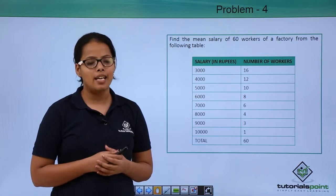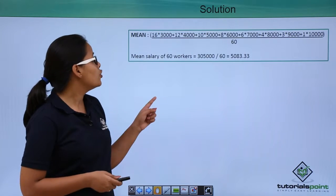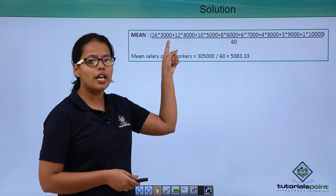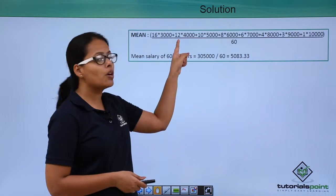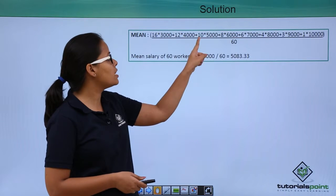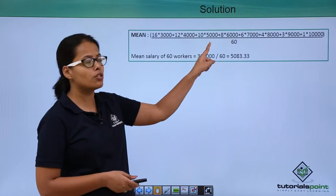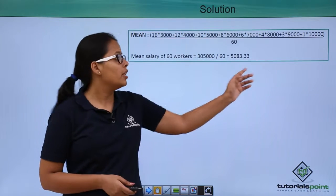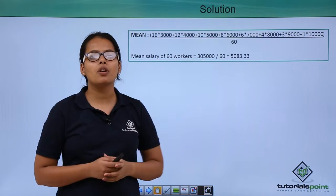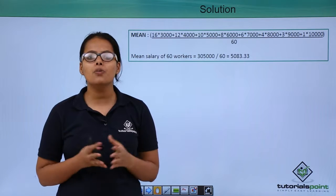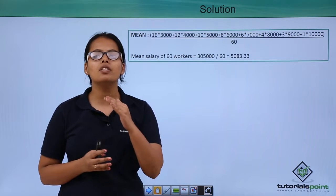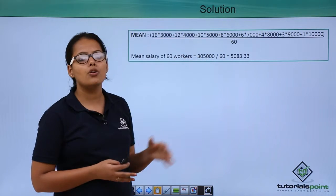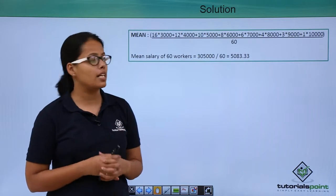Now how will you find the mean? Let's see. You have 16 workers earning 3000 rupees, 12 workers earning 4000 rupees, 10 workers earning 5000 rupees, and so on. You write these products in the numerator and divide by 60 workers, the total number of entries. That's how you find the mean for this dataset.